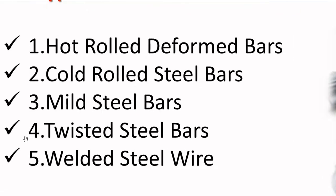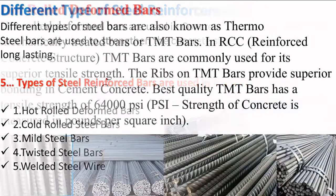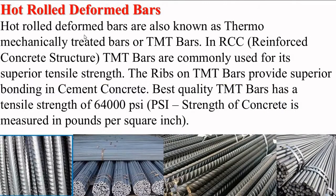Number one is hot rolled deformed bars. Hot rolled deformed bars are also known as thermo-mechanically treated bars, or TMT bars. In RCC, TMT bars are commonly used for their superior tensile strength. The ribs on TMT bars provide superior bonding in cement concrete. Best quality TMT bars have a tensile strength of 64,000 psi.